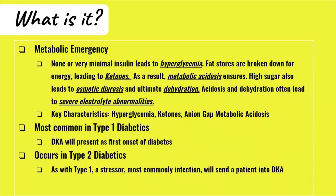Bottom line: DKA is a metabolic emergency — patients will end up in shock and ultimately die without any interventions. Typically there is no or very minimal insulin, which leads to very high levels of blood sugar as cells cannot utilize glucose for energy. So cells turn to breaking down fats for energy, leading to the production of ketones as a byproduct.